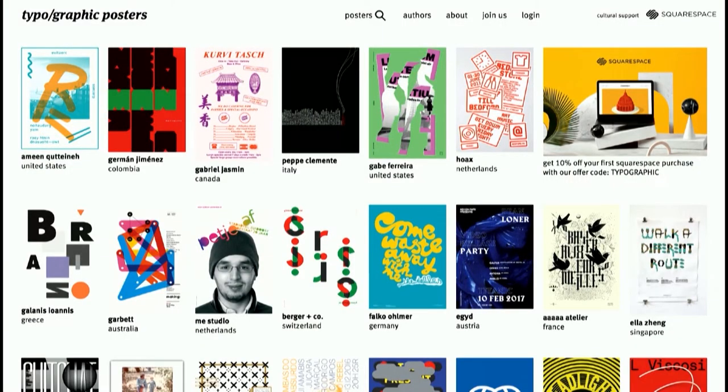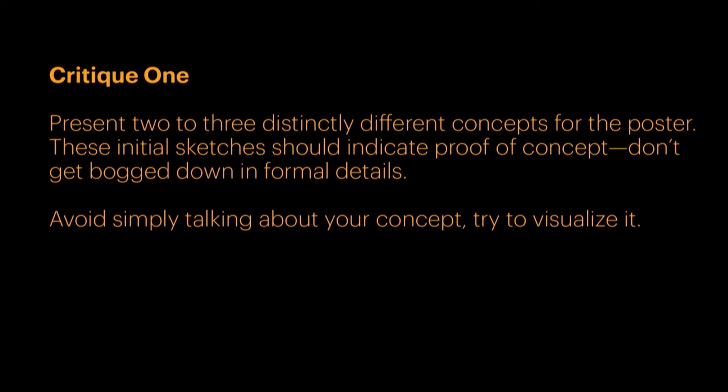I show them lots of examples of type on posters. We look at Unit Editions, we go to typographic posters, I've got lots of examples for them. So I'm primed and ready in critique one where I say present two to three different concepts. At this point they would have had to pick their amendment, do some research on it, and show these initial concepts — don't get bogged down in the perfect kerning or the right color. We want to know what your idea is, rather than students putting up stuff and spending 20 minutes talking about what they want to do with nothing up there to actually discuss visually.